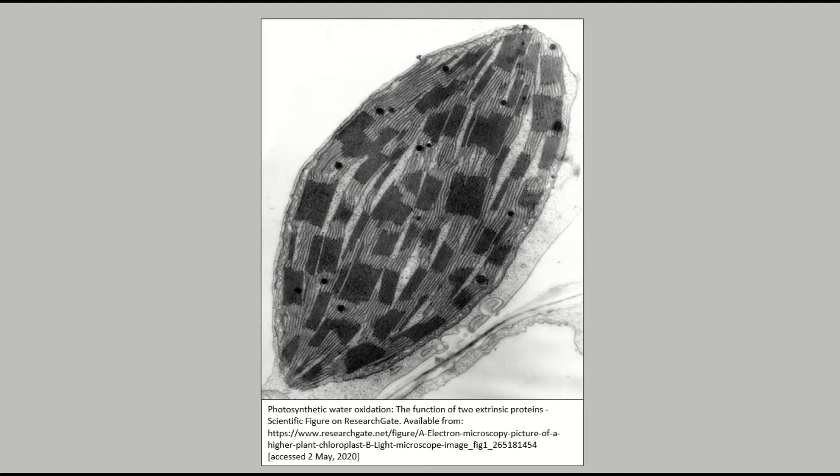This is what a chloroplast would look like under a transmission electron microscope. You can probably make out the grana which are the stacks of thylakoids and also the lamellae linking them together.